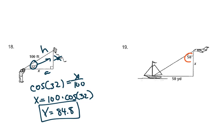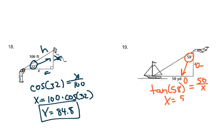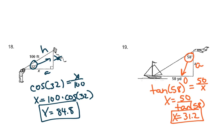Mark our angle — opposite, adjacent — so this will be tangent 58, opposite over adjacent: 50 over X. We will divide, so X equals 50 divided by tangent 58, and we'll get an answer of 31.2.